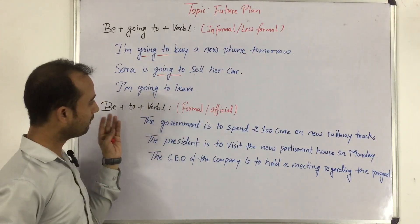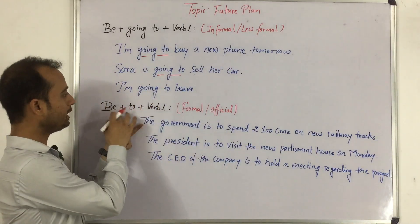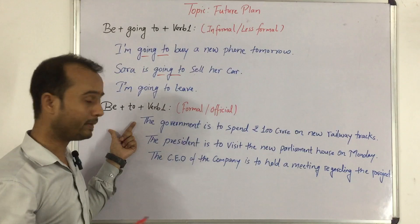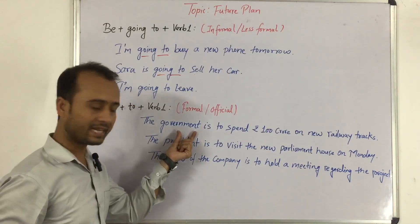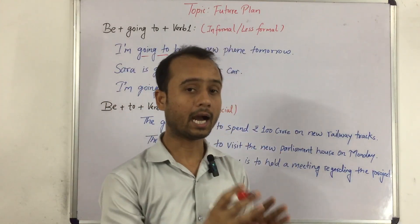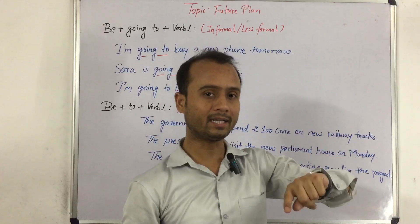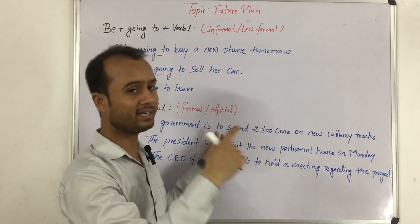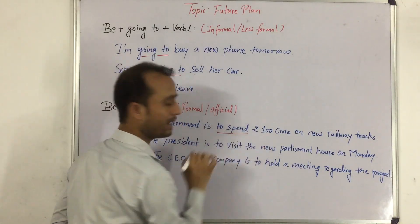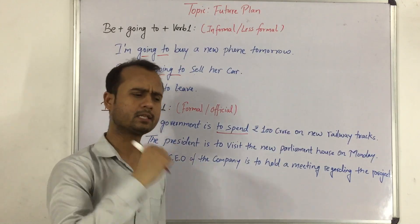Now I will show you some other type of sentences. The difference is 'be to plus workforce form' — yeh formal hai aur yeh informal hai. So formal or official language mein hum log is tarah se bolte hai: 'The government is to spend 100 crore on new railway tracks.' Government naye railway tracks banane ke liye 100 crore rupees kharch karne wali hai. Notice karayi — here it is not 'going to' because 'going to' is informal. If you read newspapers, you will find this type of sentence very often.